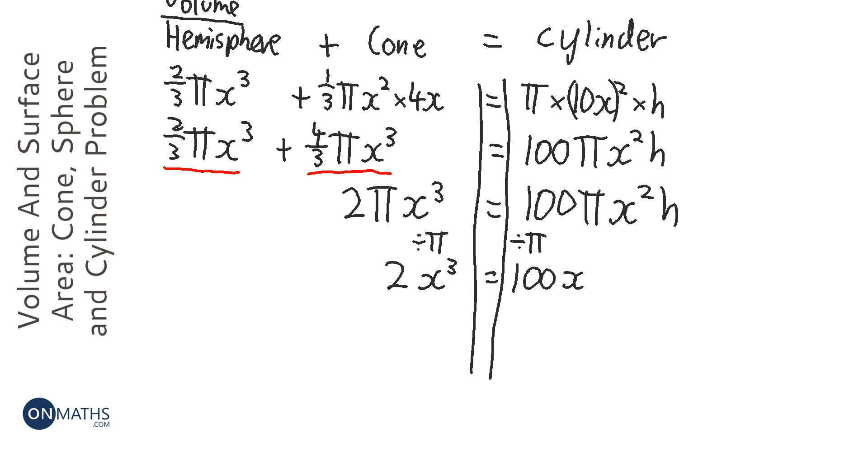Now we want h on its own, so we're getting close. We need to divide by the x squared first to get h on its own, so I divide by x squared.